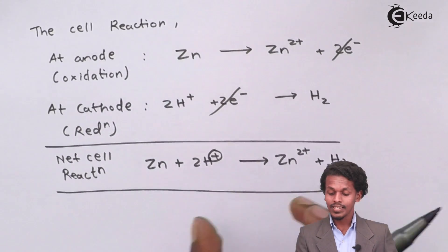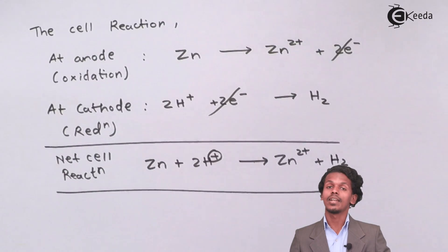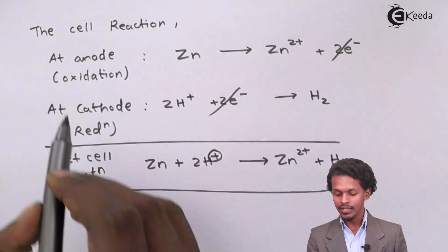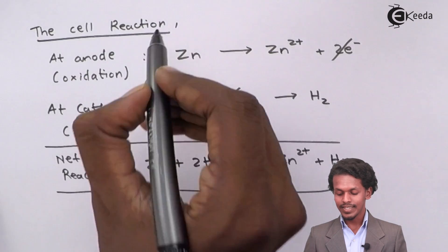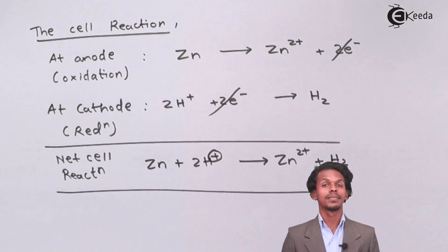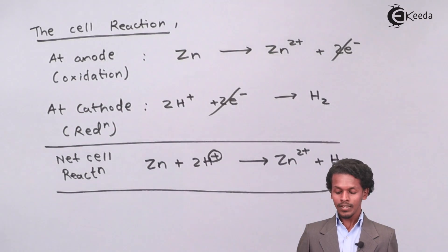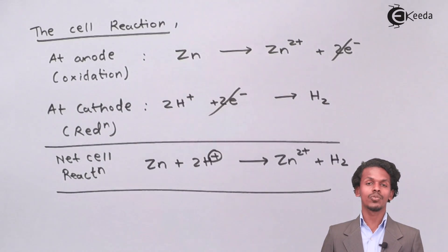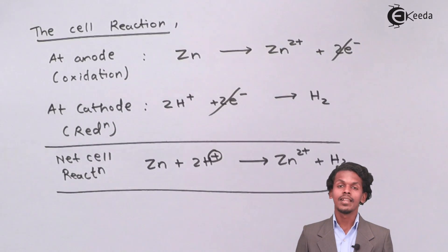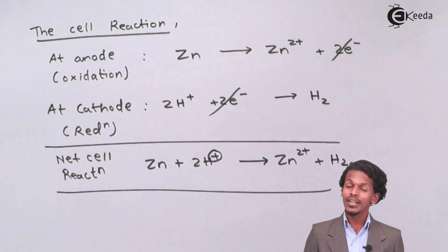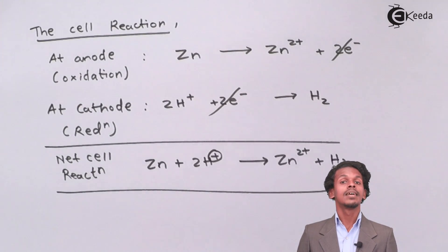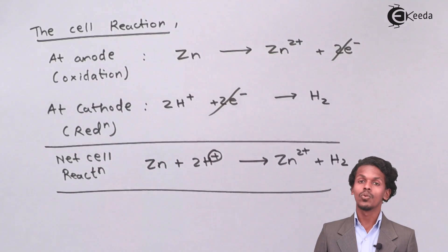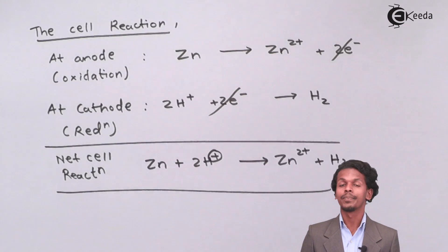So the products are Zn²⁺ and molecular hydrogen H₂, and the reactants are solid zinc plus 2H⁺. These are the products and reactants from the cell reaction. Now it will be easy to calculate the cell potential, but first we need the standard cell potential.